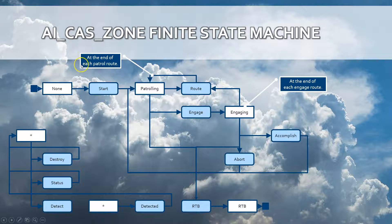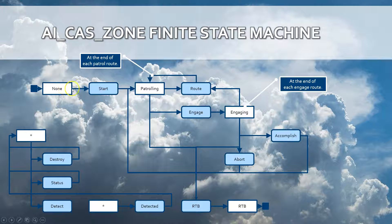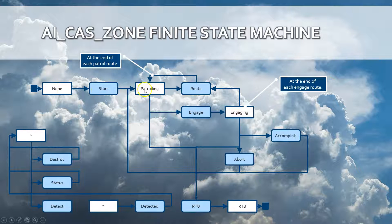The white boxes express the state of the process. The light blue boxes are events that trigger a state transition — for example, here from 'none' to 'patrolling'. Behind each state transition there is logic built within the process that makes the AI behave in different ways.